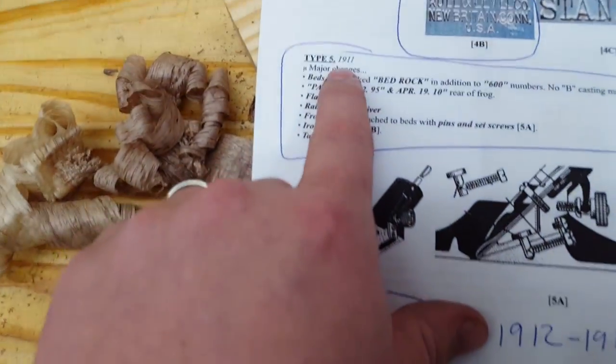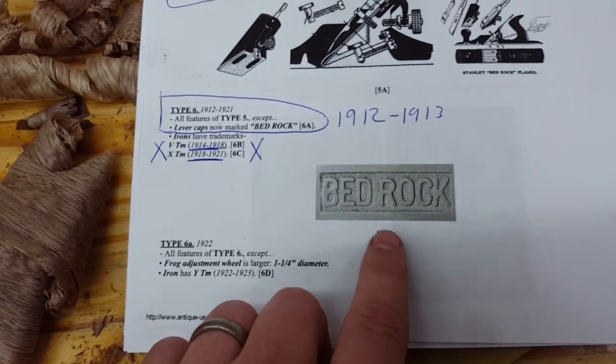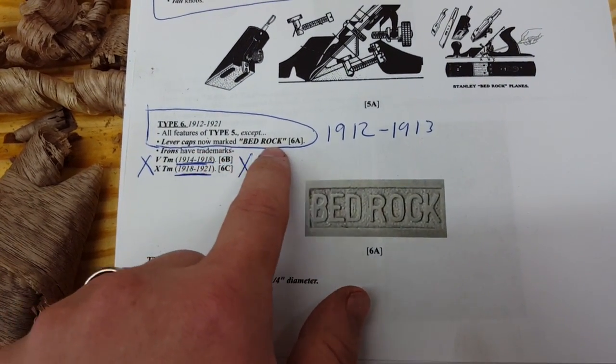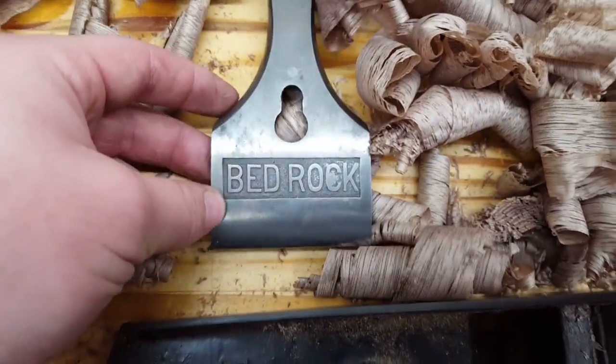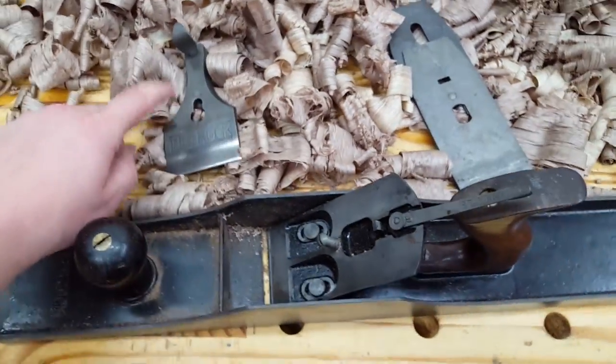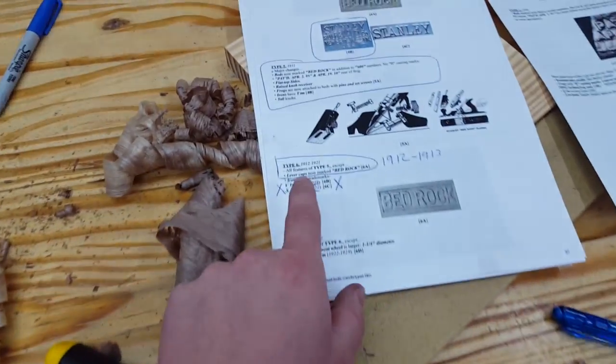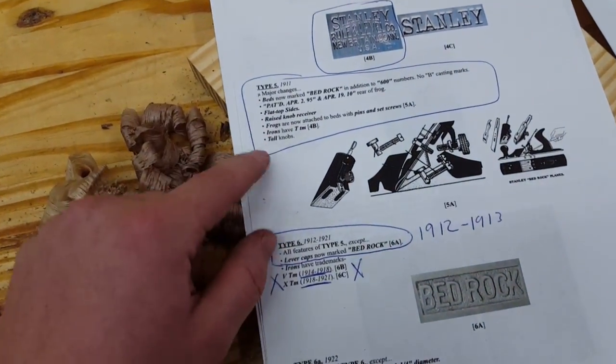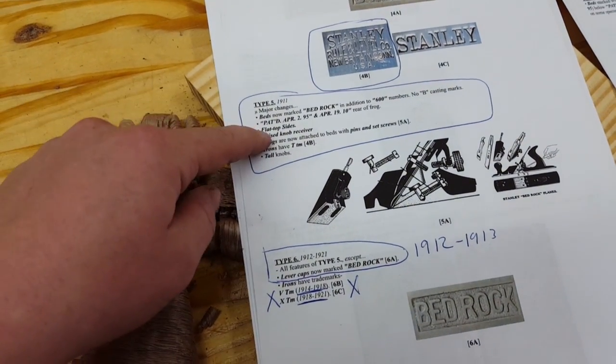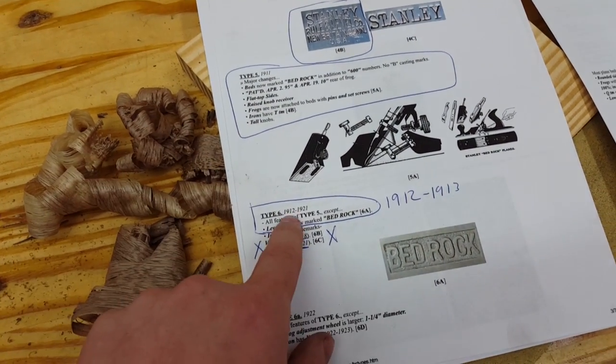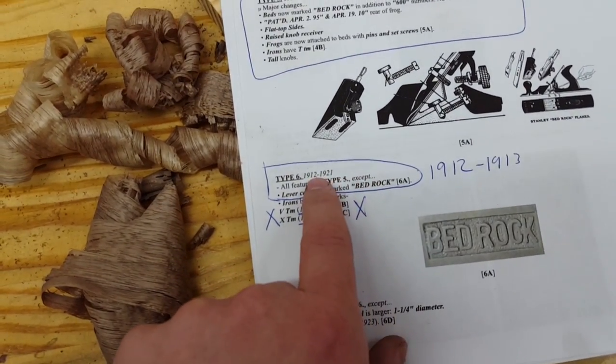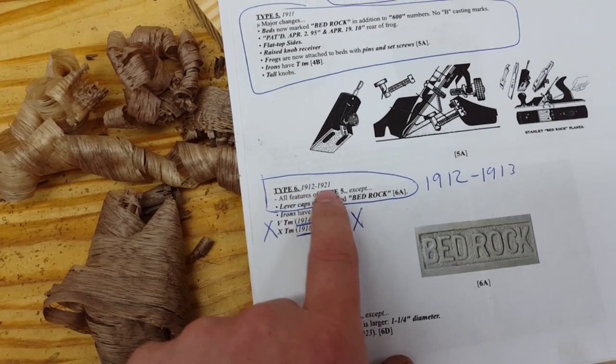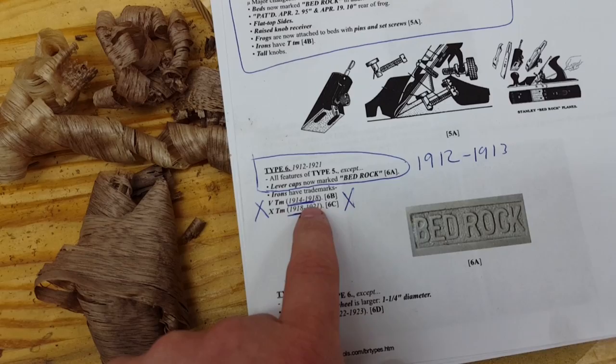So I originally thought it was the type 5 from 1911. However, the bedrock lever cap wasn't introduced until type 6, so lever caps are now marked bedrock, which this way is marked bedrock. So either the lever cap is from a slightly newer plane and the rest of the plane or jointer is from 1911, or it is, the whole thing is from 1912 to 1913. Because this says 1912 to 21 is type 6, but I think it stops at 13 because in 1914 the blade is changed.